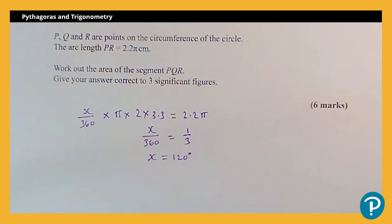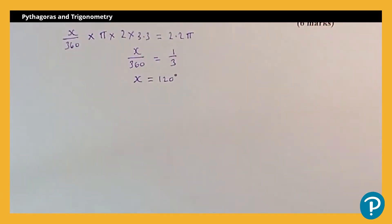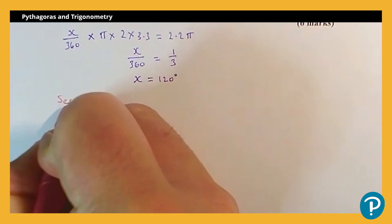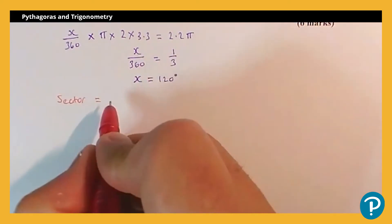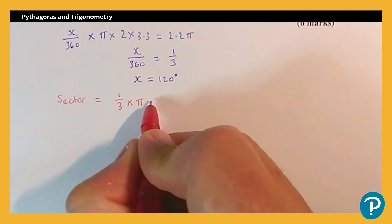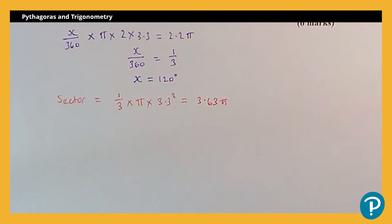I'm now able to find the area of the sector and the area of the triangle. Starting with the sector — that will be the bigger area. The sector is just a portion of the area of the circle, and I know it's 120 out of 360, or a third. So a third times pi times the radius squared, 3.3 squared, which comes in at 3.63 pi. It's fine if you've written that as a decimal. Try to remember when using your calculator not to do any premature rounding. If you've got the decimal, either use a memory function or write out the full decimal so you don't lose accuracy.